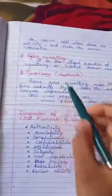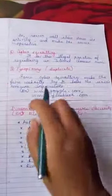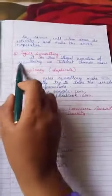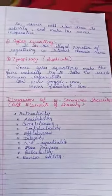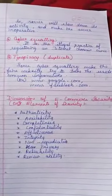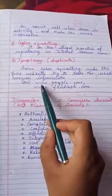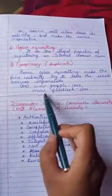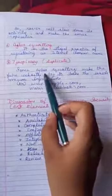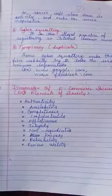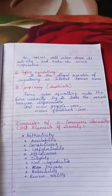Next is cyber-squatting, which means the illegal practice of registering internet domain names. Related to this is typo piracy — 'piracy' meaning duplicate. Cyber-squatting creates duplicate versions of original websites. For example, Google becomes www.google.com and Facebook is duplicated as www.faceblock.com by cyber-squatters. These are the threats in e-commerce.